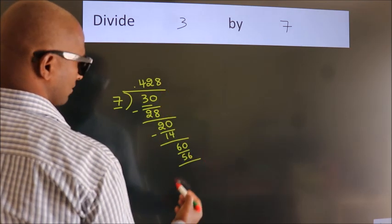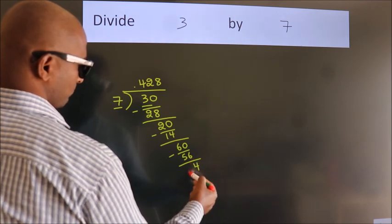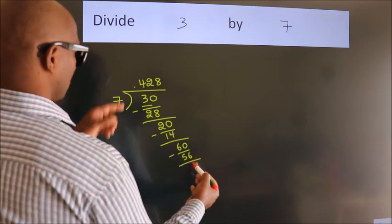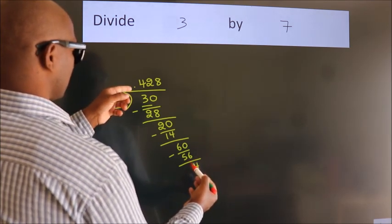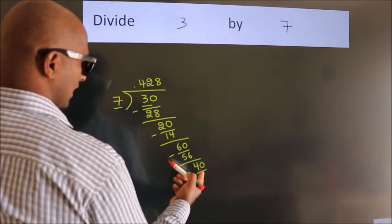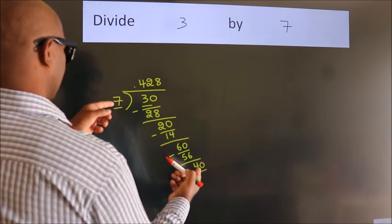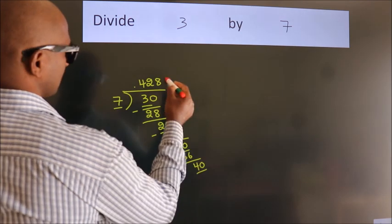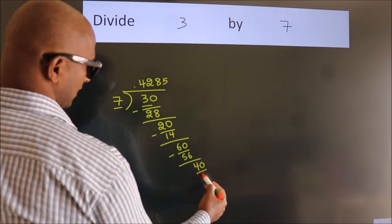Now, we subtract. We get 4. After this, we already have the decimal. So, directly take 0. So, 40. A number close to 40 in 7 table is 7 fives, 35.